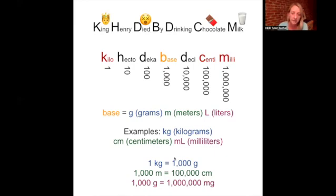So just keep practicing this. The King Henry died by drinking chocolate milk, or at least the KHDBDCM and the numbers under it. That's another thing that you're going to want to write down on your scrap paper as soon as you start the test so that it's there for you to reference when you get the first math problem that asks you to use it. So that's it for now. And we're going to move on next to using these conversions in actual calculations.